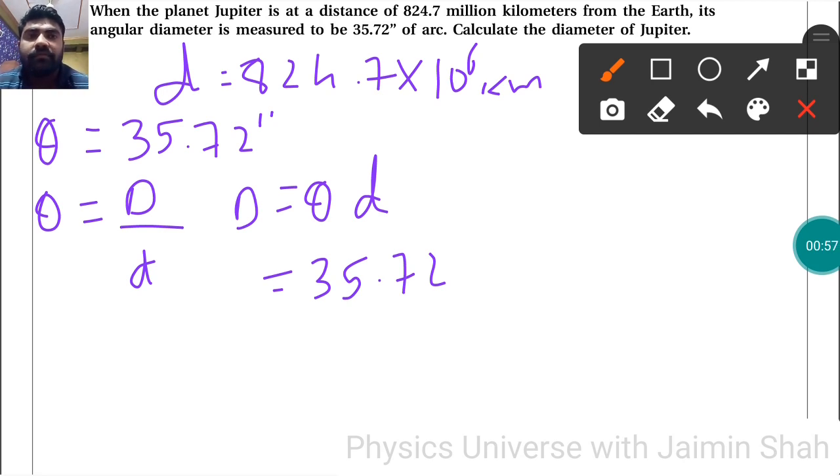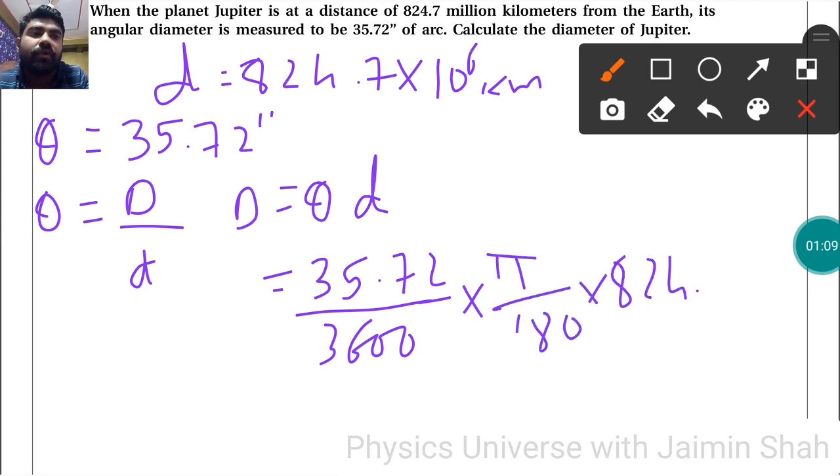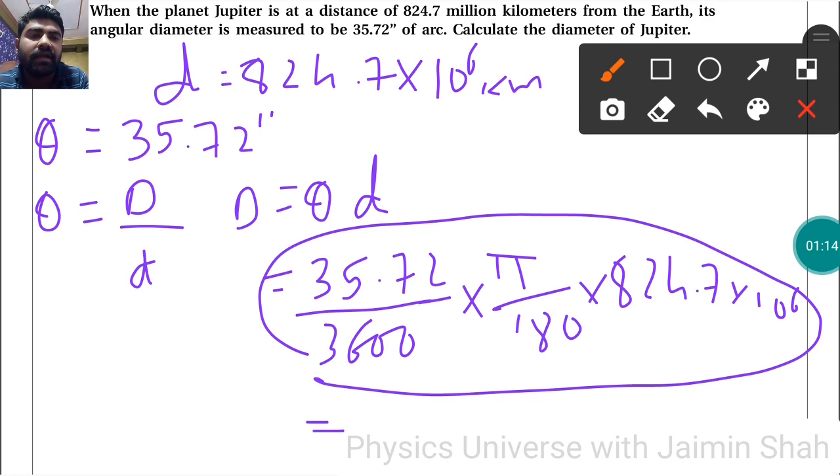Seconds should be converted into degrees first, so divide by 3600 to get degrees, then convert to radians by multiplying by π/180. Then multiply by d, which is 824.7 × 10^6. After all the multiplication, we will get our answer in kilometers, which is the diameter of Jupiter.